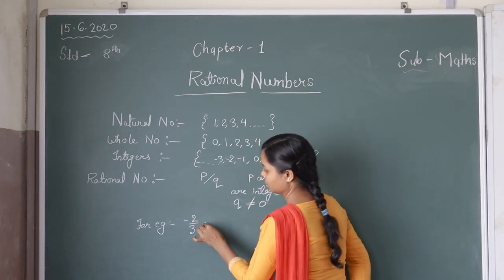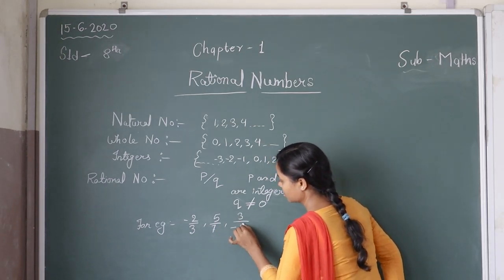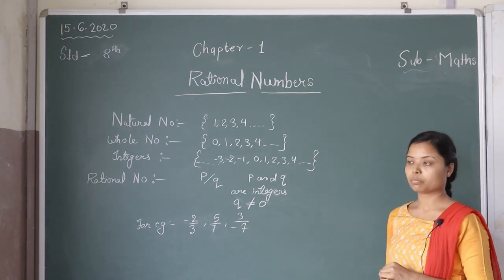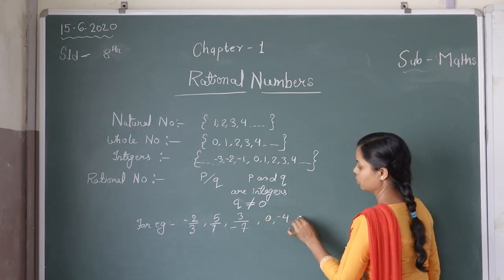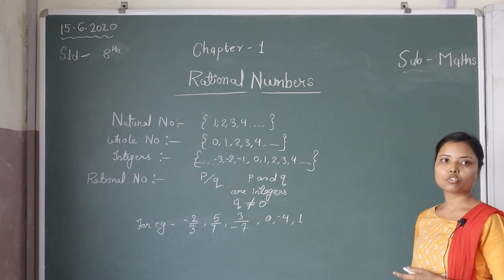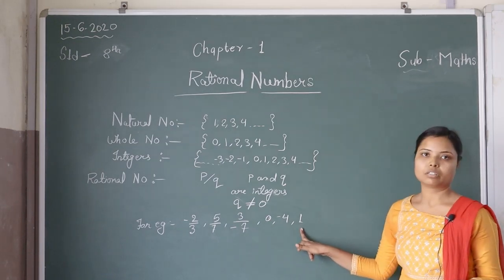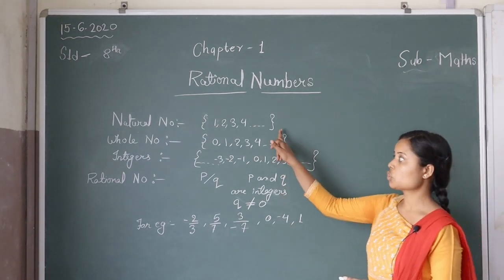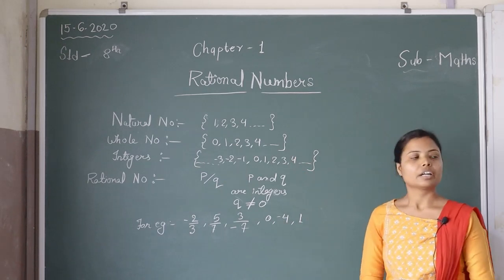For example, minus two by three, five by seven, three by minus seven are rational numbers. Also, zero, minus four, and one are rational numbers. If we write these numbers in p by q form: zero by one, minus four by one, and one by one. So natural numbers, whole numbers, and integers are all rational numbers.